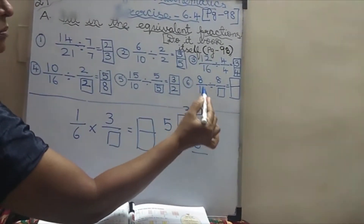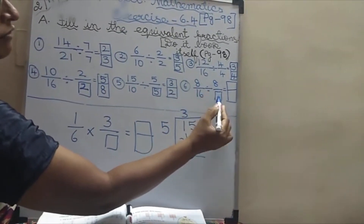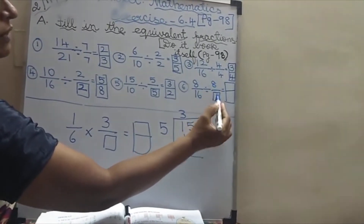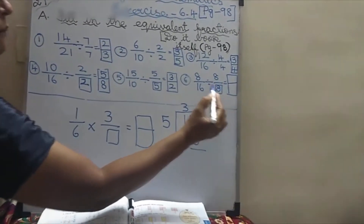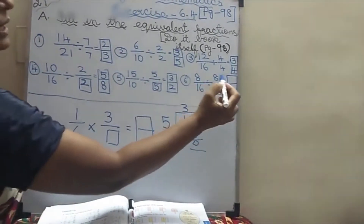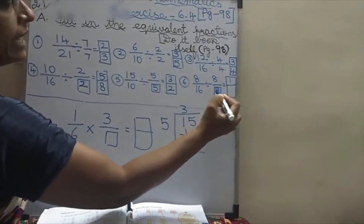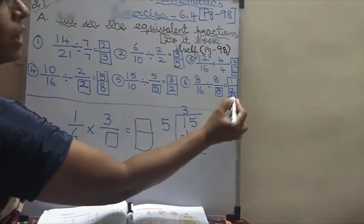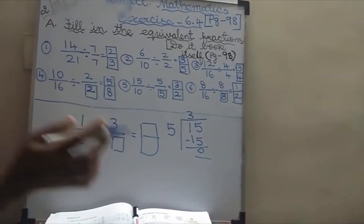The sixth one: 8 by 16 divided by 8, and fill in the boxes. What number will come? 8 only will come. In 8 tables: 1 8 is 8 and 8 2s are 16. So, 1 by 2 is the answer.